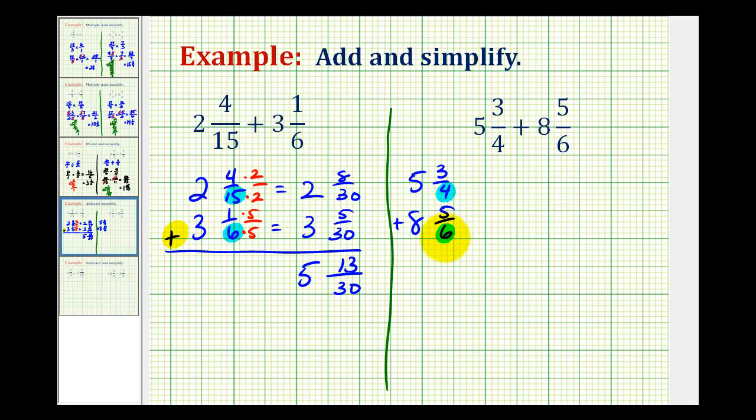Twelve is the smallest number that is a multiple of both four and six. So we're going to multiply three-fourths by three over three. We'll multiply five-sixths by two over two. Again, notice how both denominators are now equal to twelve. So here we're going to have five and this will be nine-twelfths. And here we'll have eight and ten-twelfths.